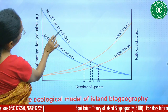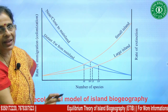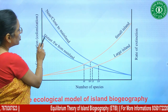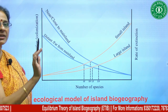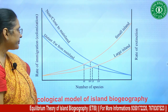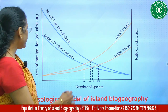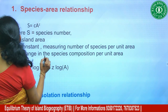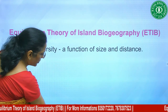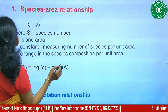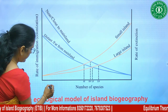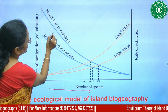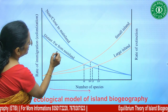Immigration is higher for near or close islands. At the same time, species on smaller islands face more pressure.